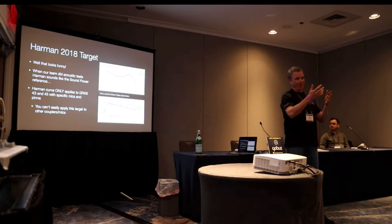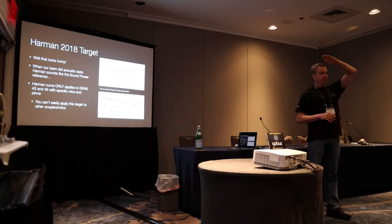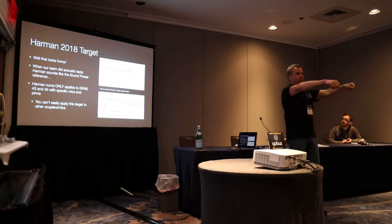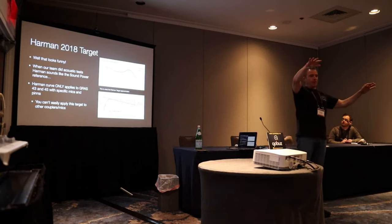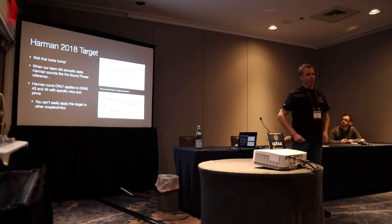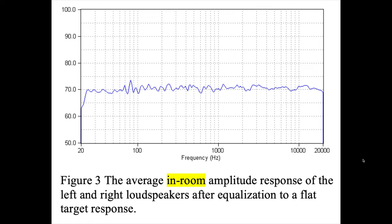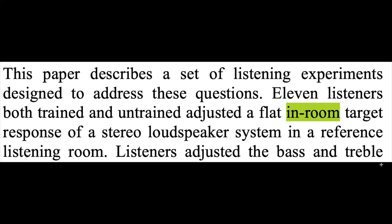However, it all goes downhill from there. If we have a speaker in a room that's equalized to this curve and is as close as we can get to ideal, we'll give people the ability to adjust equalizers on their headphones and then measure the resultant response curve when they think they've matched the room. What listeners were originally given was a flat in-room frequency response, not a downward sloping response. Both trained and untrained listeners adjusted a flat in-room target response of a stereo loudspeaker system.